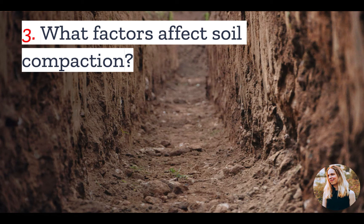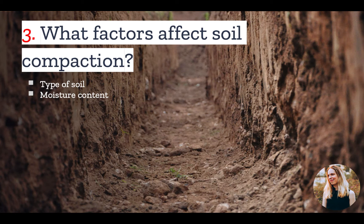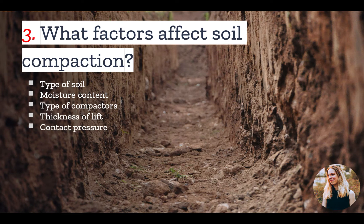Number three: what factors affect soil compaction? The primary factor is the type of soil on your land. Not all soil types respond the same way to compaction, and certain types, such as well-graded granular soils, are more easily compacted and easier to work with for construction. In addition, water content is highly important — the maximum soil dry density is only achieved when water content is at its ideal level. Other factors include the type of compactor used, the thickness of soil layers being added, the contact pressure between compactor and soil, the speed at which you roll over the soil, and the number of roller passes used.